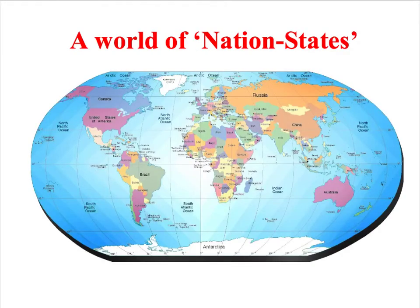Modern states are what we call nation states. Nation states operate within specific geographical boundaries and each has a central government which exercises control over the population within these boundaries. So modern states are essentially countries with their own central government. The entire surface of the planet now, with the single exception of Antarctica, is divided for purposes of government into territories that we know as nation states.